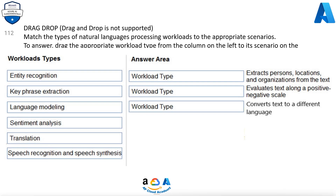Question 112. Match the types of natural language processing workloads to the appropriate scenarios. Drag the appropriate workload type from the column on the left to its scenario on the right. Each workload type may be used once, more than once, or not at all. Note, each correct selection is worth 1 point.